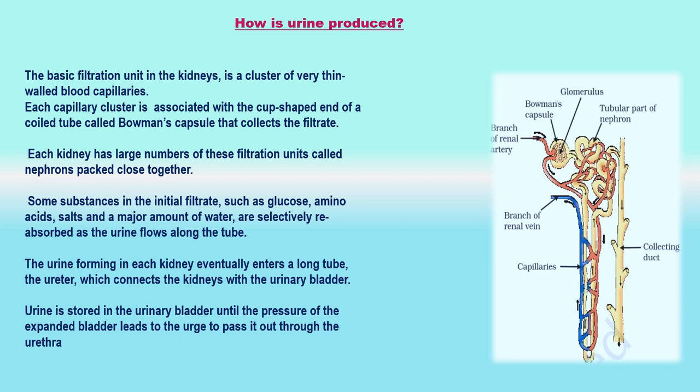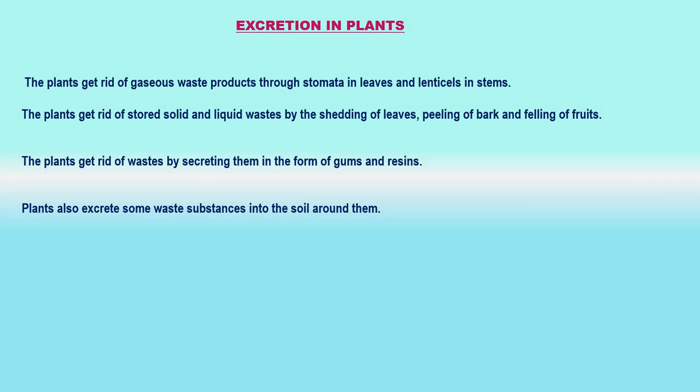The bladder is muscular, so it is under nervous control. As a result, we can usually control the urge to urinate. Excretion in plants: Plants get rid of gaseous waste products through stomata in leaves and lenticels in stems. Plants get rid of stored solid and liquid wastes by the shedding of leaves, peeling of bark, and falling of fruits. Plants get rid of wastes by secreting them in the form of gums and resins. Plants also excrete some waste substances into the soil around them.